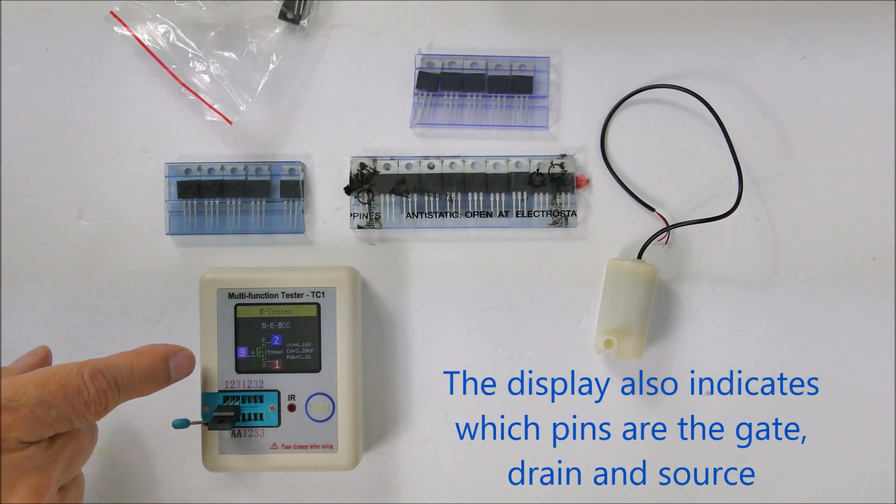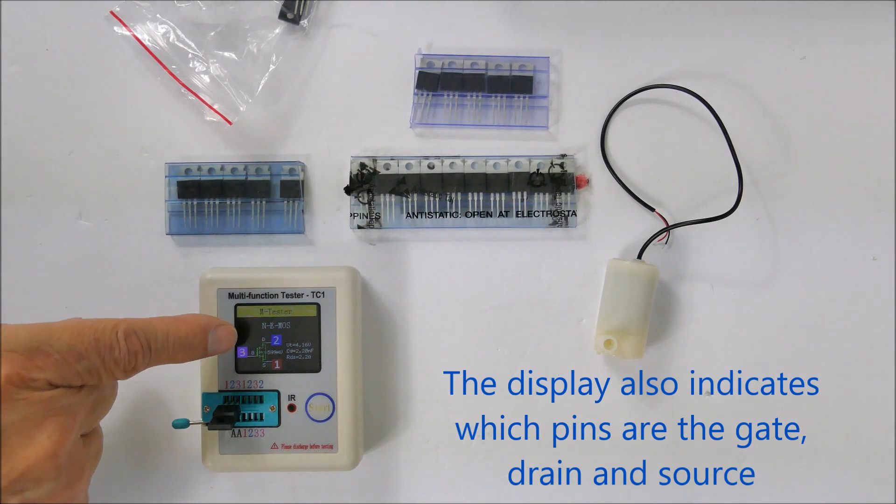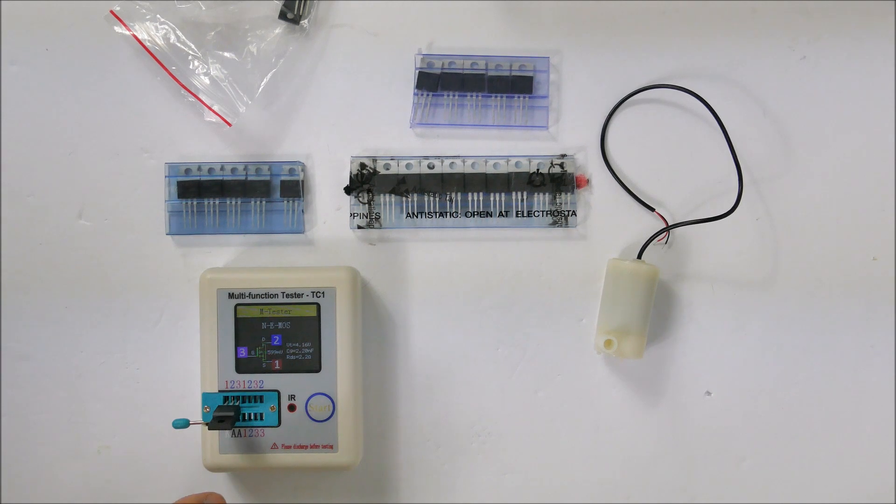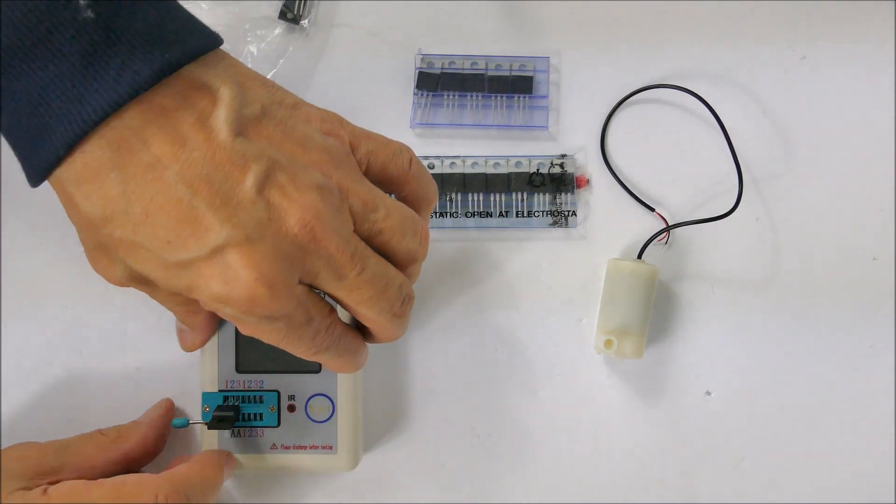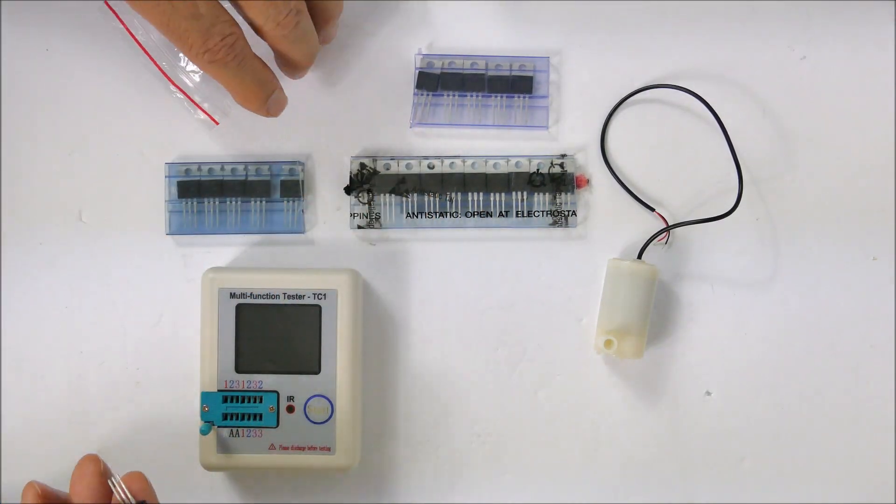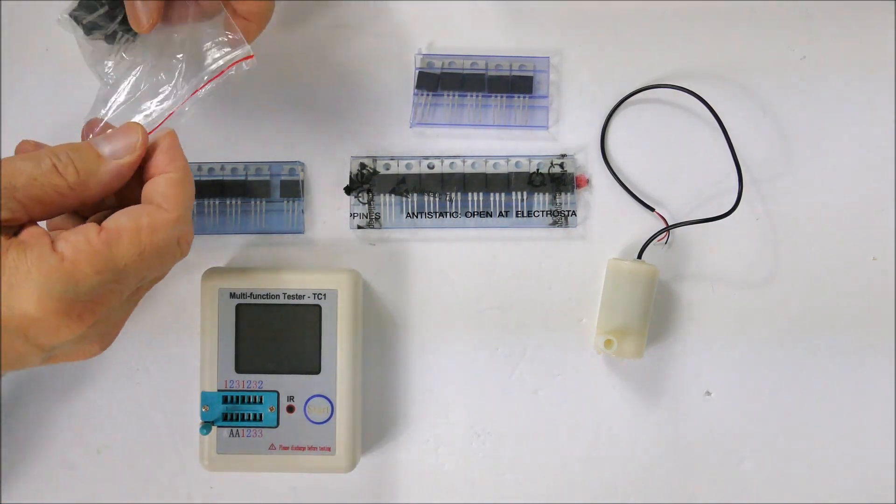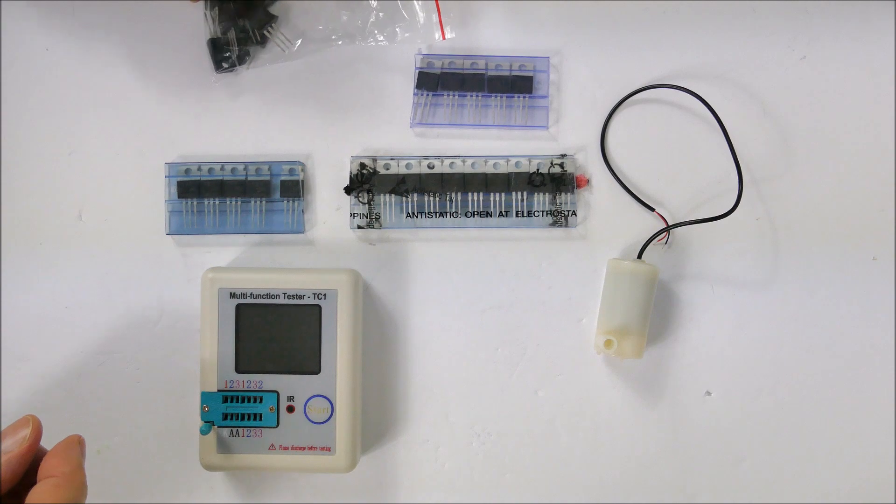It has a threshold voltage of 4.16 volts and RDS, which is the on-resistance, of 2.2 ohms. That's pretty good but the 4.1 volt threshold is higher than I want, so I'm not really going to want to use those.